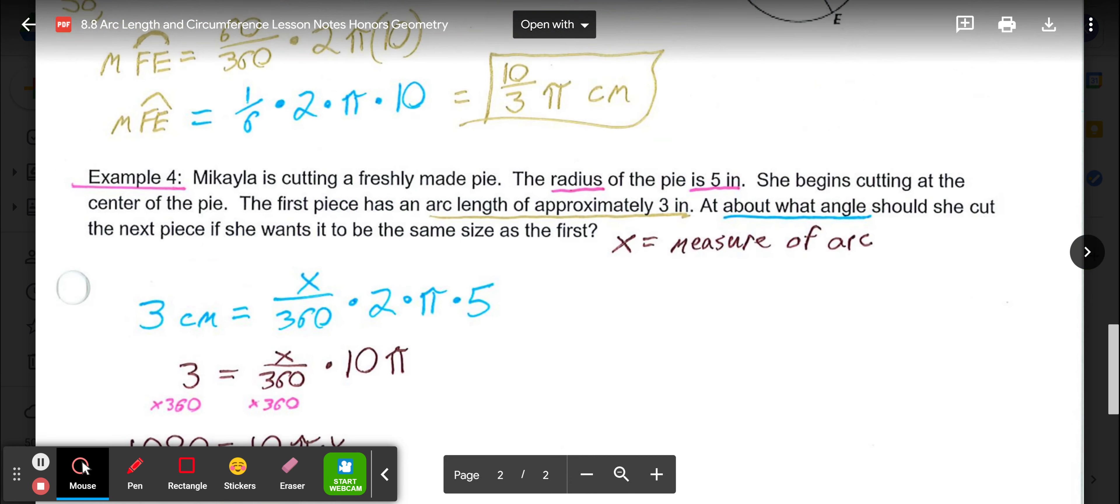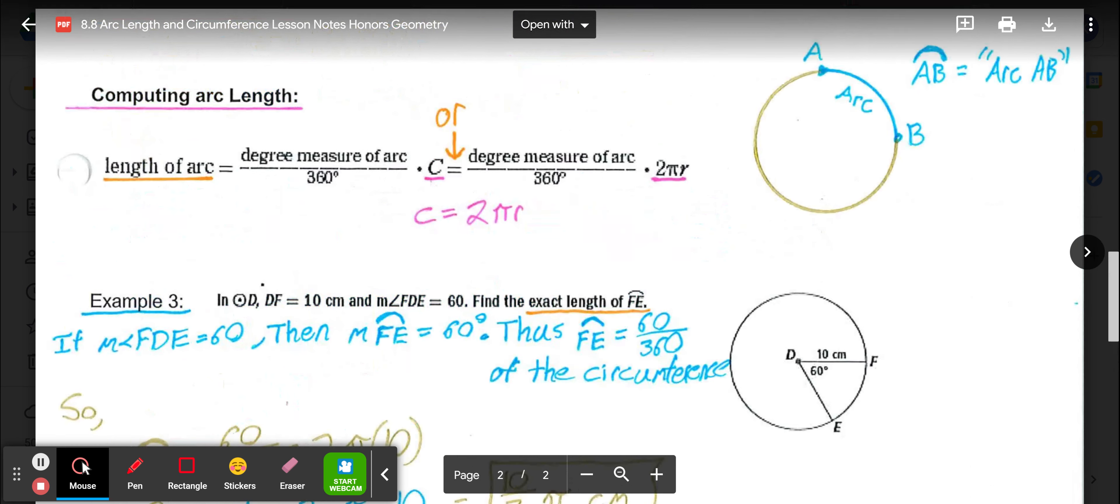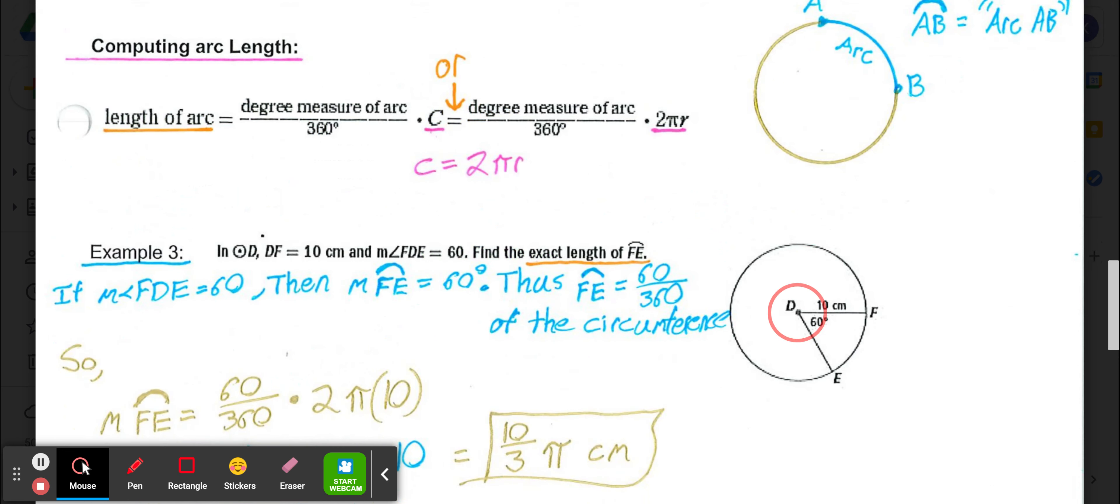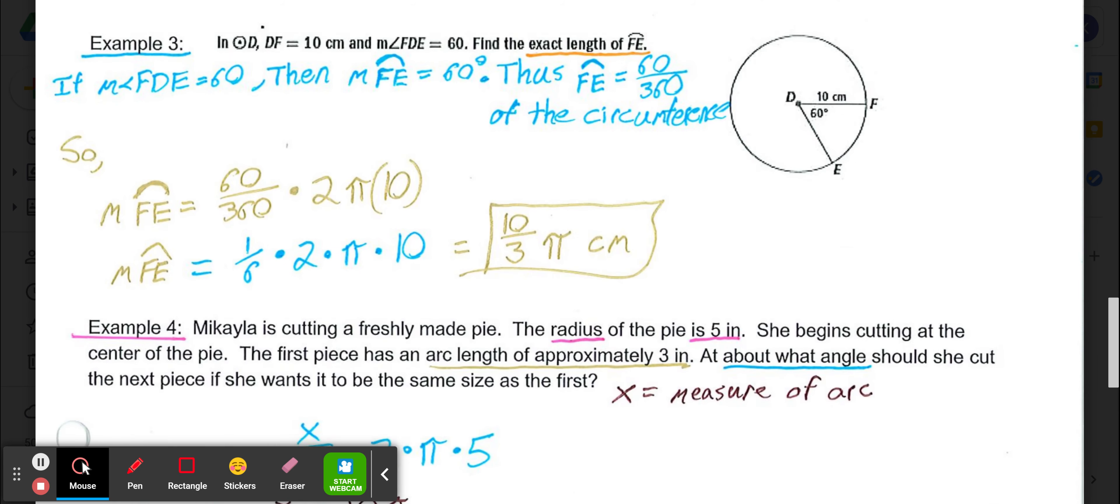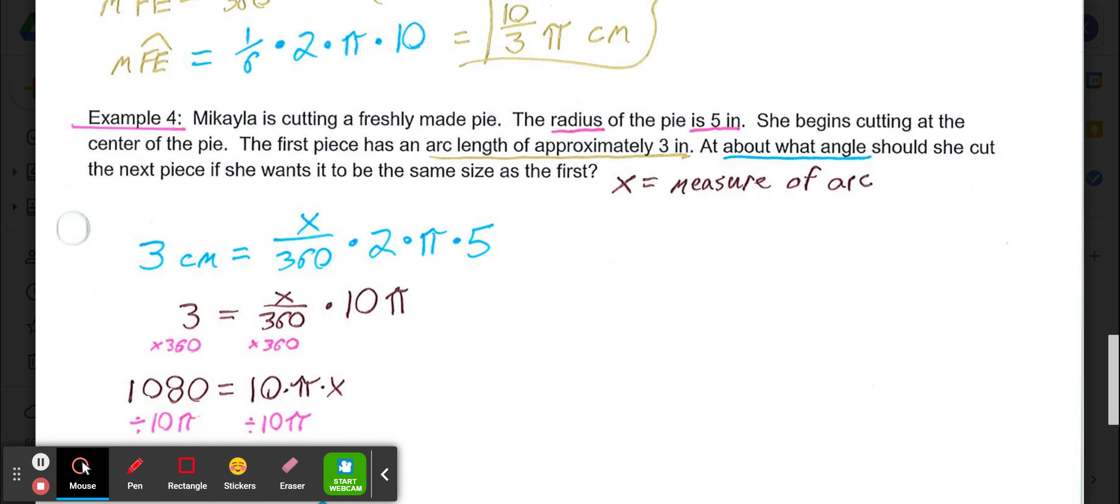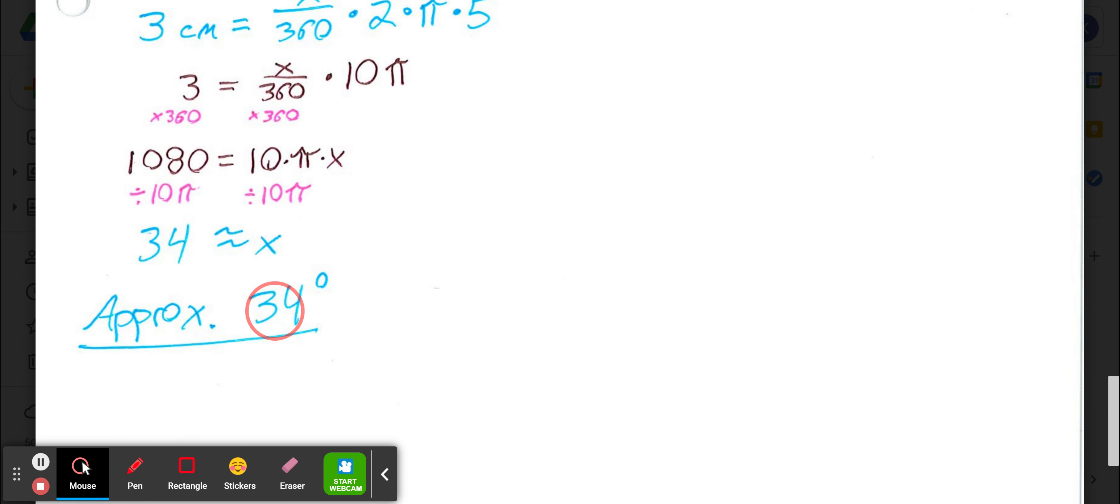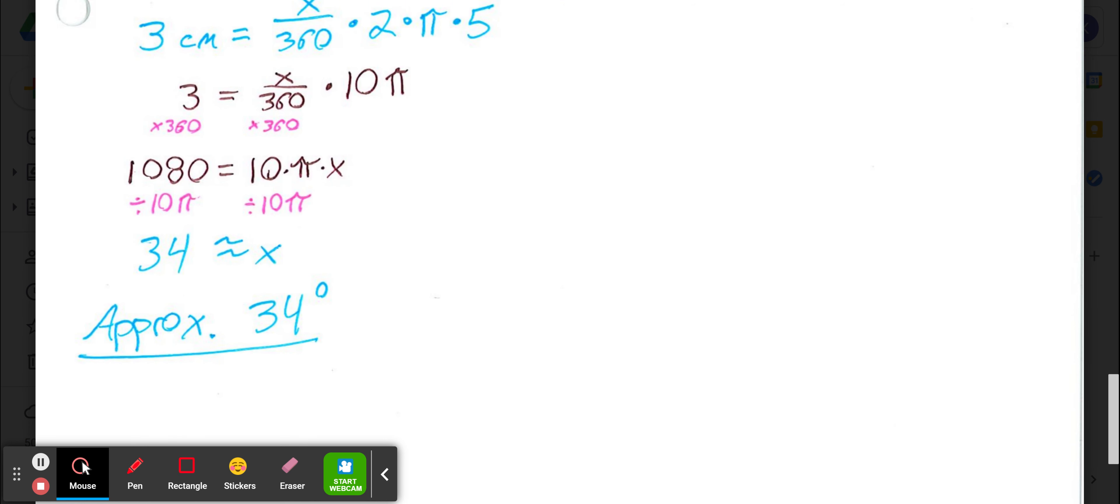What you want to keep in mind, other than this length of arc setup, is if we have a central angle like angle FDE, the measure of that angle, 60 degrees, equals the measure of the arc it creates. That is why when we work backward, we'd want all these center angles to be 34 degrees for our pieces to come out approximately the same.